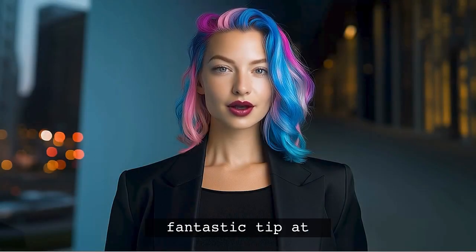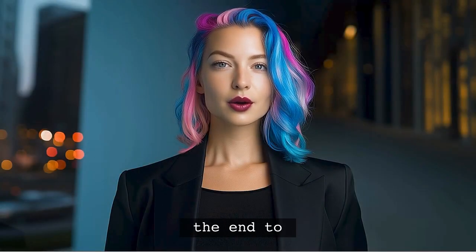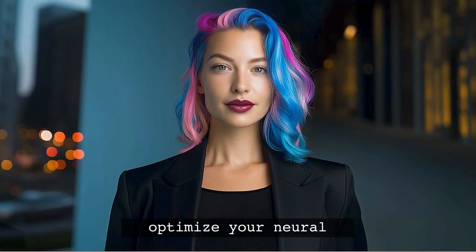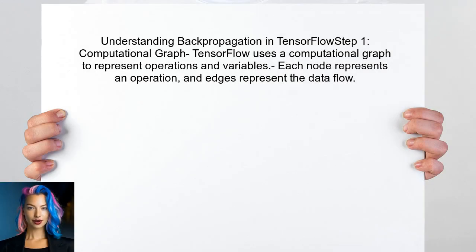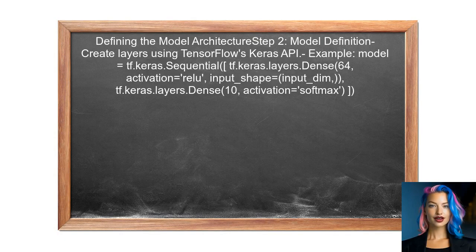I have a fantastic tip at the end that will help you optimize your neural network training process — you won't want to miss it. To understand how TensorFlow performs backpropagation, first recognize that it relies on a computational graph. This graph represents the operations and variables in the neural network. Next, the user needs to define the model architecture, which includes layers and activation functions. TensorFlow uses this structure to compute gradients during backpropagation.